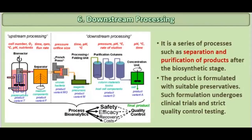At last, we have our final step — downstream processing. Downstream processing is a series of processes such as separation and purification of products after the biosynthetic stage. The product is formulated with suitable preservatives, and such formulations undergo clinical trials and strict quality control testing.